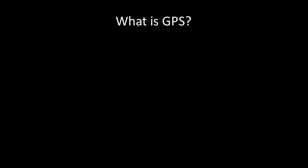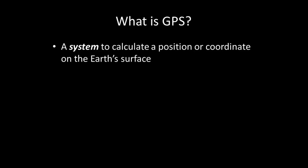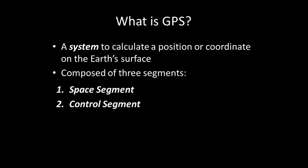A formal definition of GPS is that it is the system to calculate the position or coordinate on the Earth's surface. As it is a system, GPS is composed of three segments. The space segment, the control segment, and the user segment. In the following slides, I explain each segment in further detail.